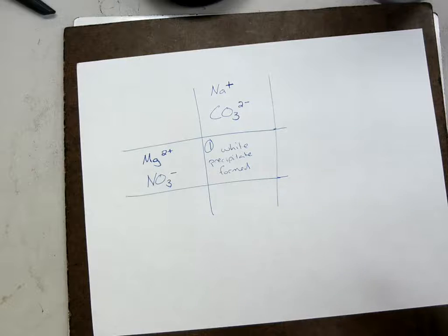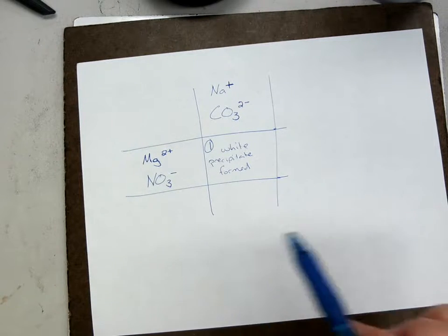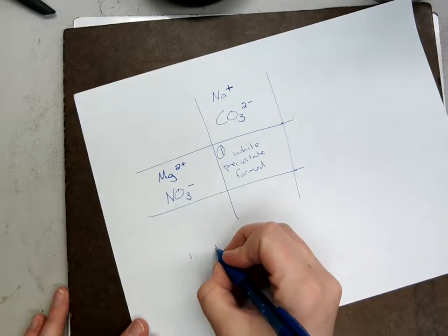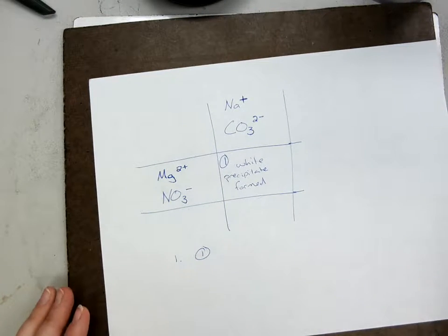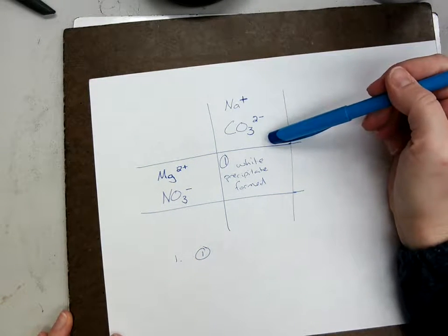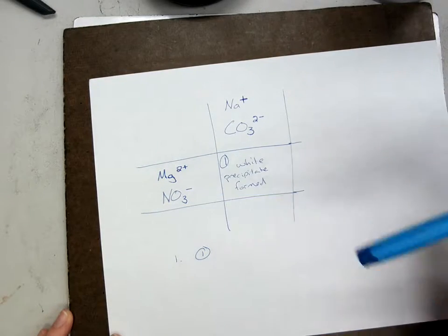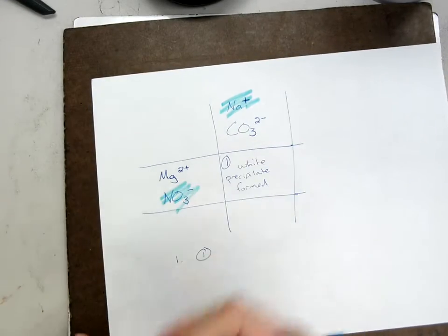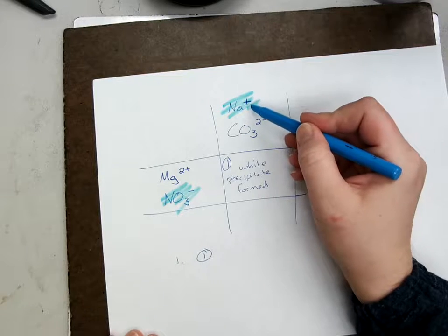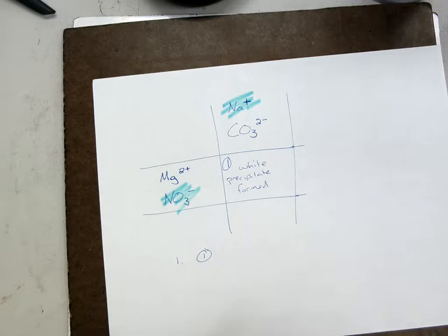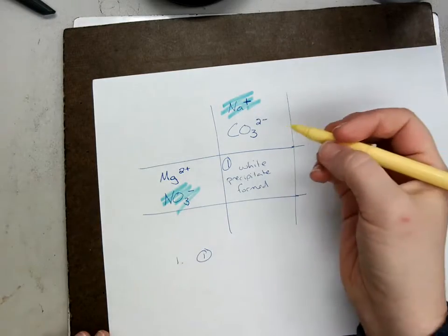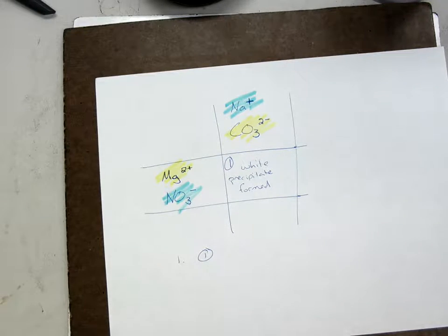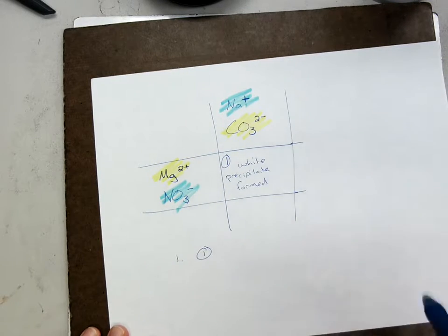Okay, calculation one says to take the boxes where things happened and to list the possible products. And I would label it one for box one. Now sodium carbonate was a reactant. Magnesium nitrate was a reactant. Your possible products are sodium nitrate. So you take the positive of the first compound, put it with the negative of the other. Or your other possible product is magnesium carbonate. And when you put them together, do pay attention to those charges. Make sure the charges cancel out.